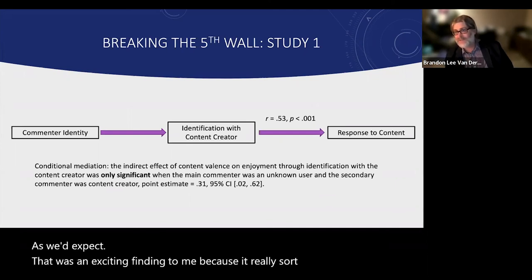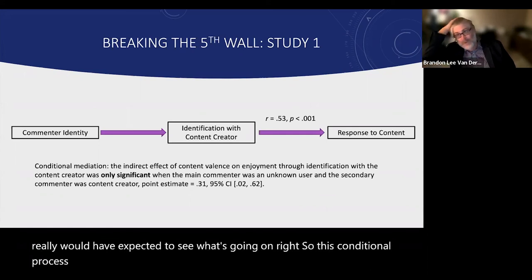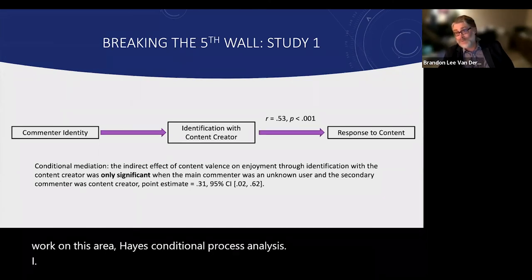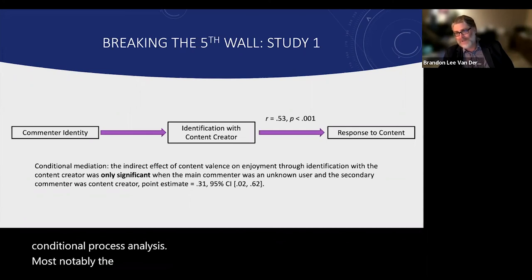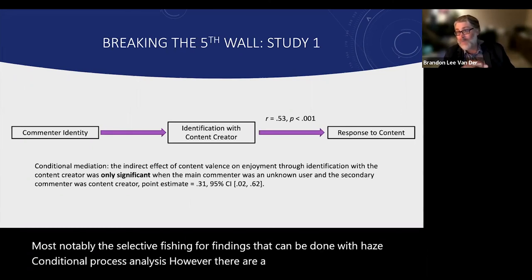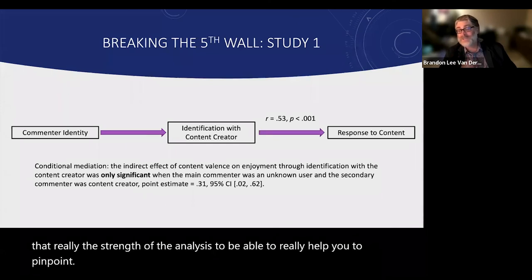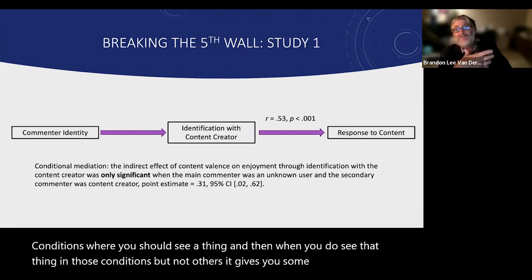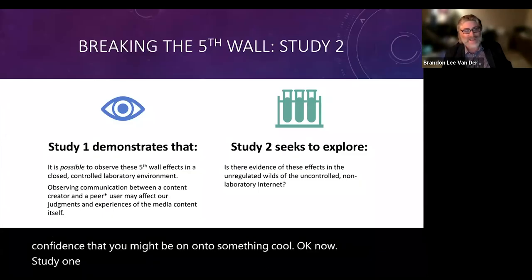It didn't matter who the secondary commenter was or whether there was no secondary comment — but when the main commenter was a person just like the people in our study and the secondary commenter was the content creator, that's when we saw identification with the content creator mediate the relationship as expected. That was an exciting finding, using Hayes' conditional process analysis — which has strengths in pinpointing conditions where you should see an effect, and when you do see it in those conditions but not others, it gives you confidence you're onto something.